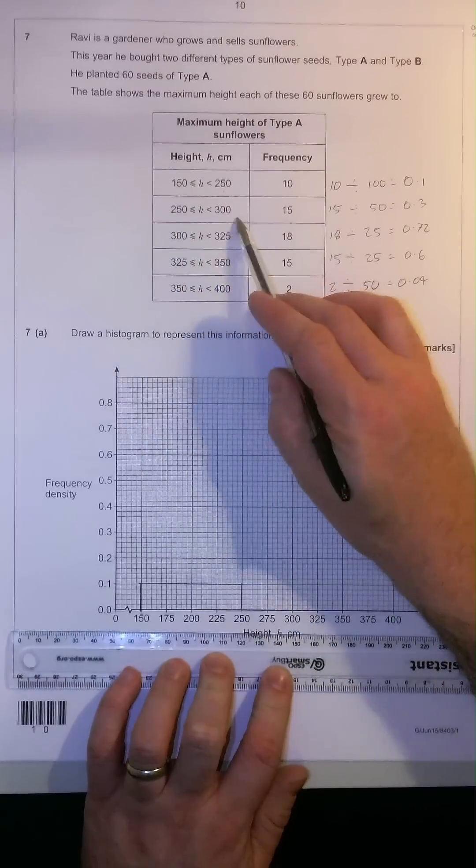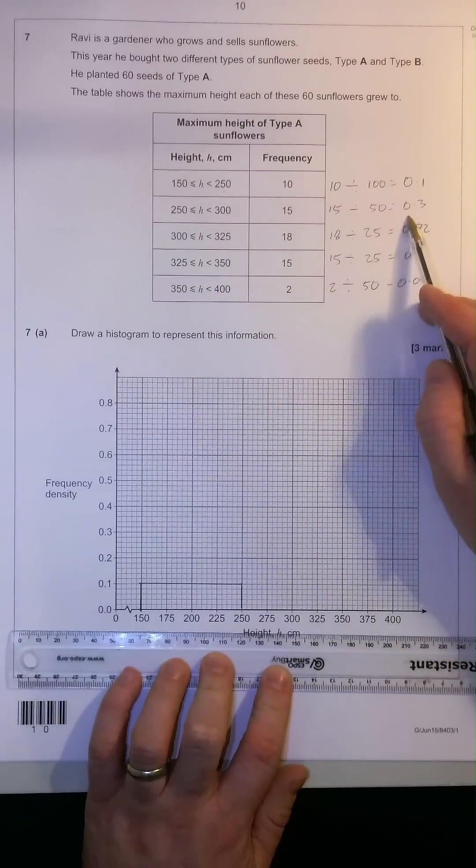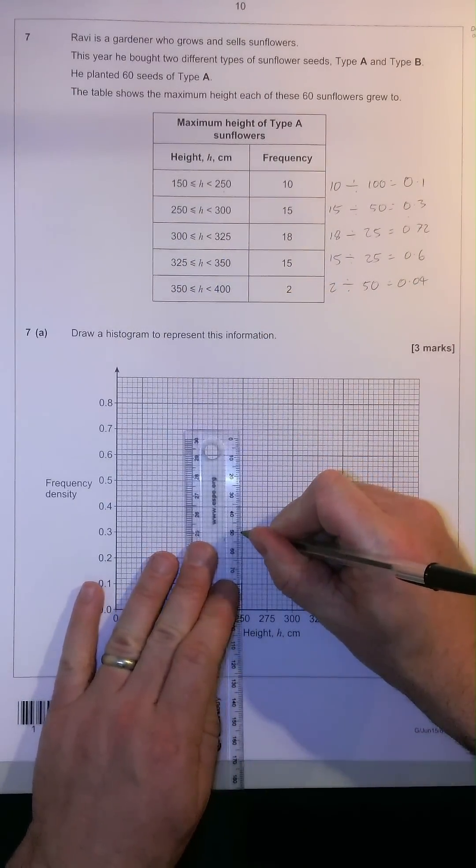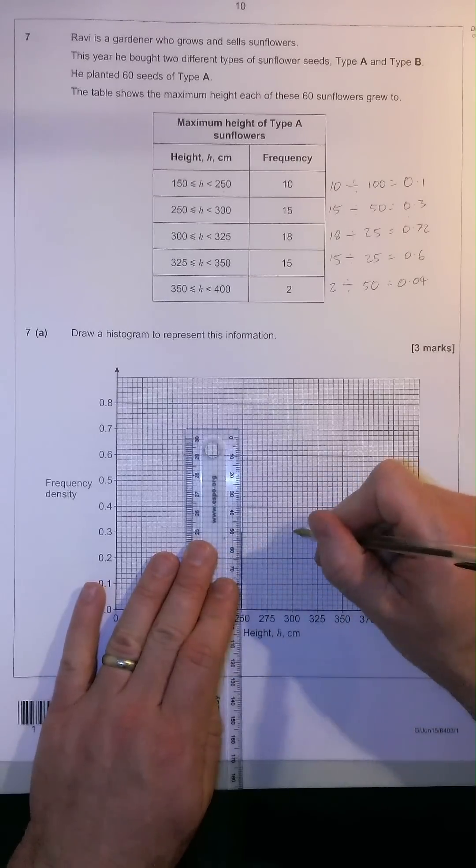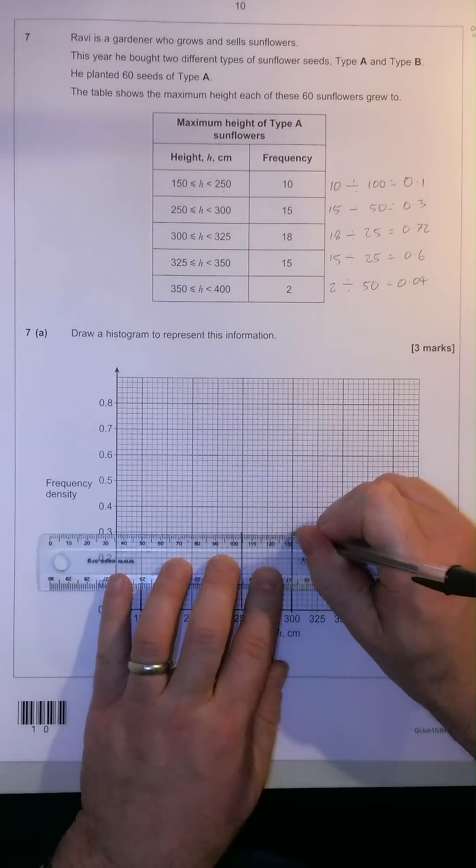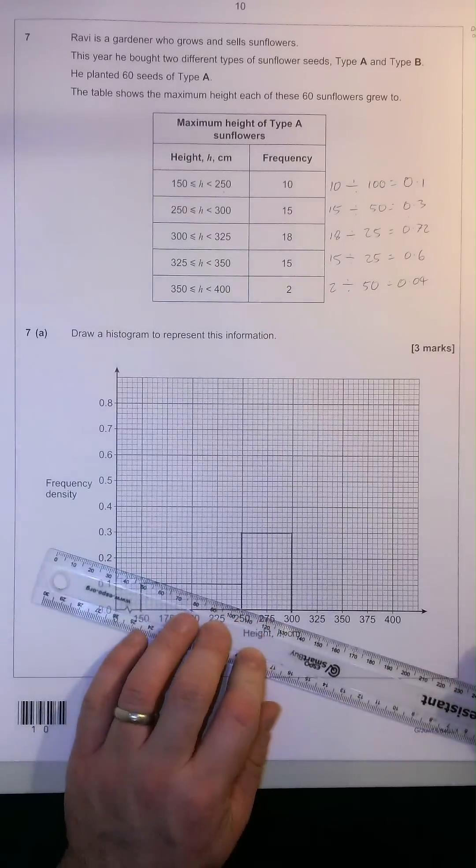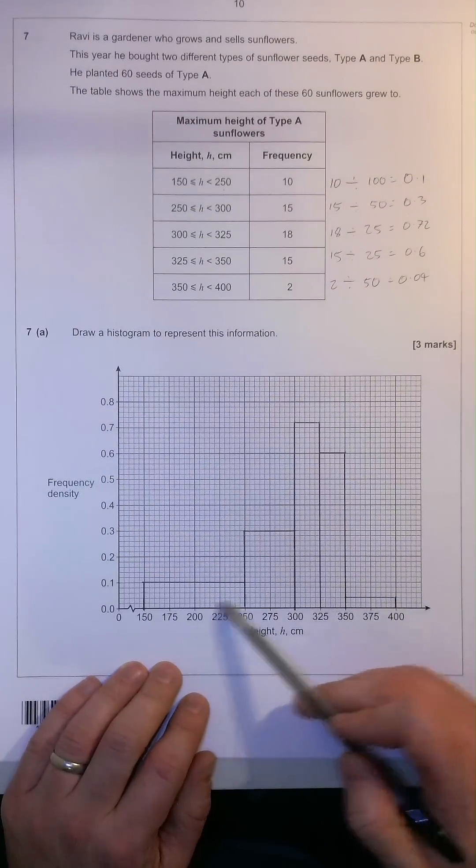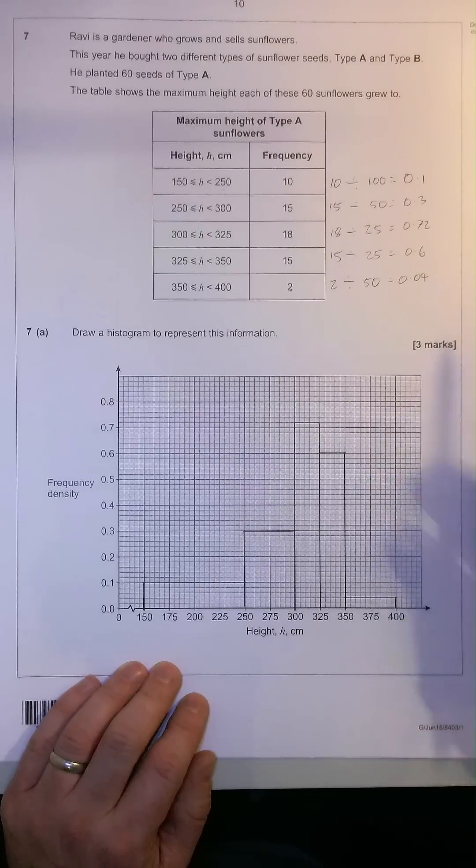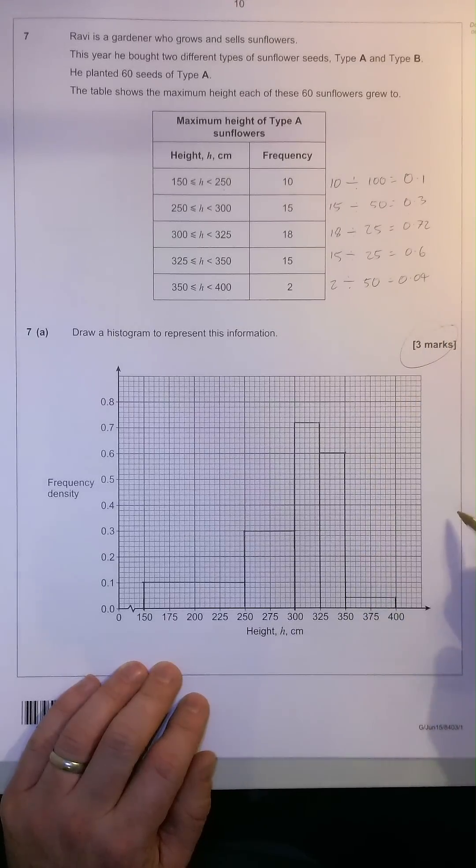Secondly, 250 to 300 will be 0.3 high. And we're going to go and do that for all of our columns. There we go. We've drawn all five columns on in the height that we worked out earlier. Three marks are secured. All right.